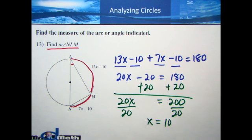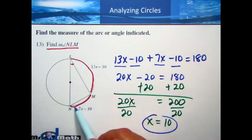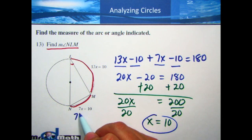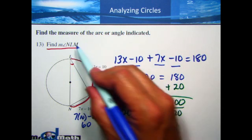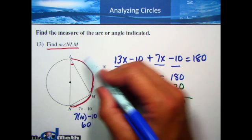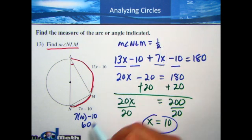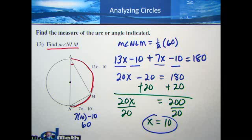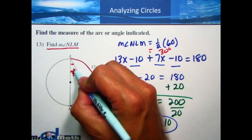However, I wasn't asked to find X or an arc — I was asked to find the measure of an angle. So I'm going to take X equals 10 and remember I'm looking for the angle that creates this arc. I know X is 10, so I have 7 times 10 minus 10, which is 70 minus 10, which would be 60. The angle NLM is equal to half the arc of NM, which in this case is 60. Half of 60 means this angle is going to equal 30 degrees.